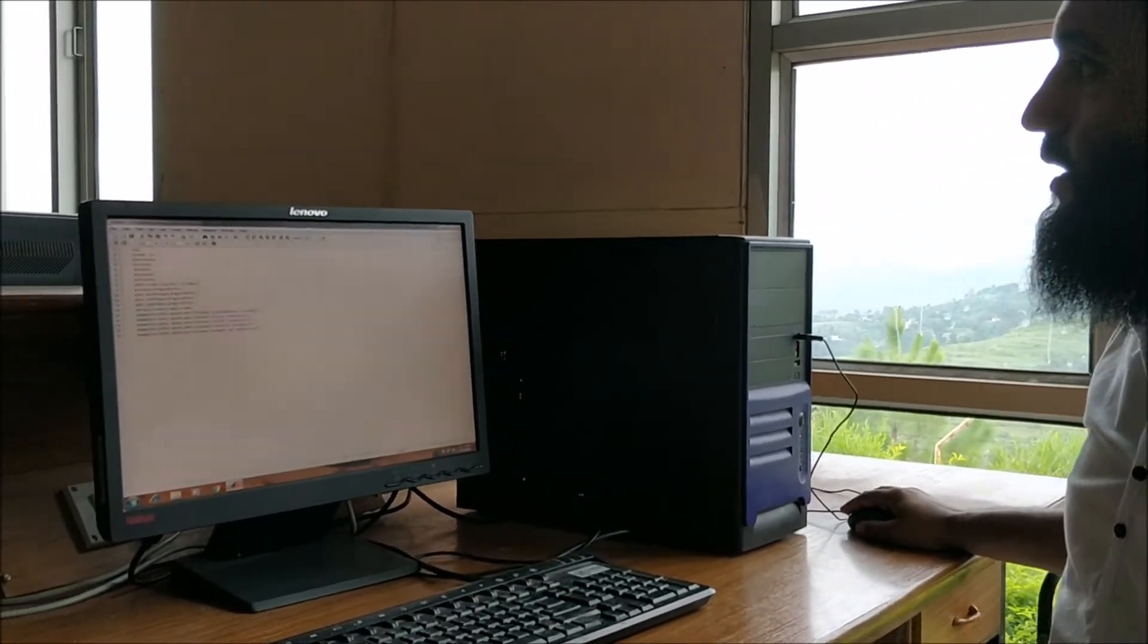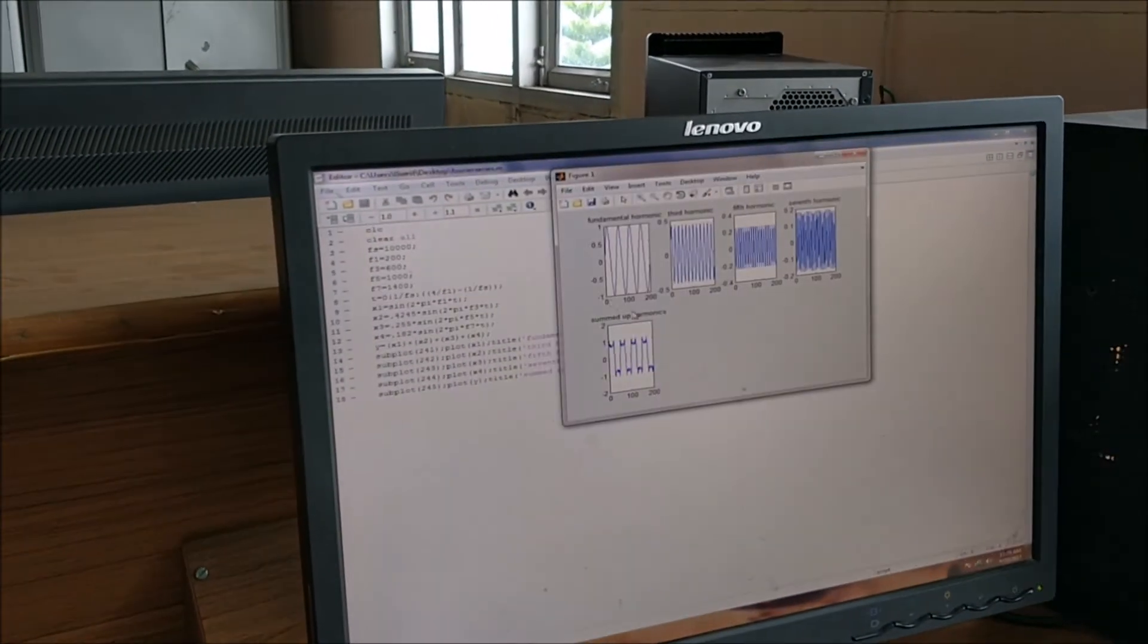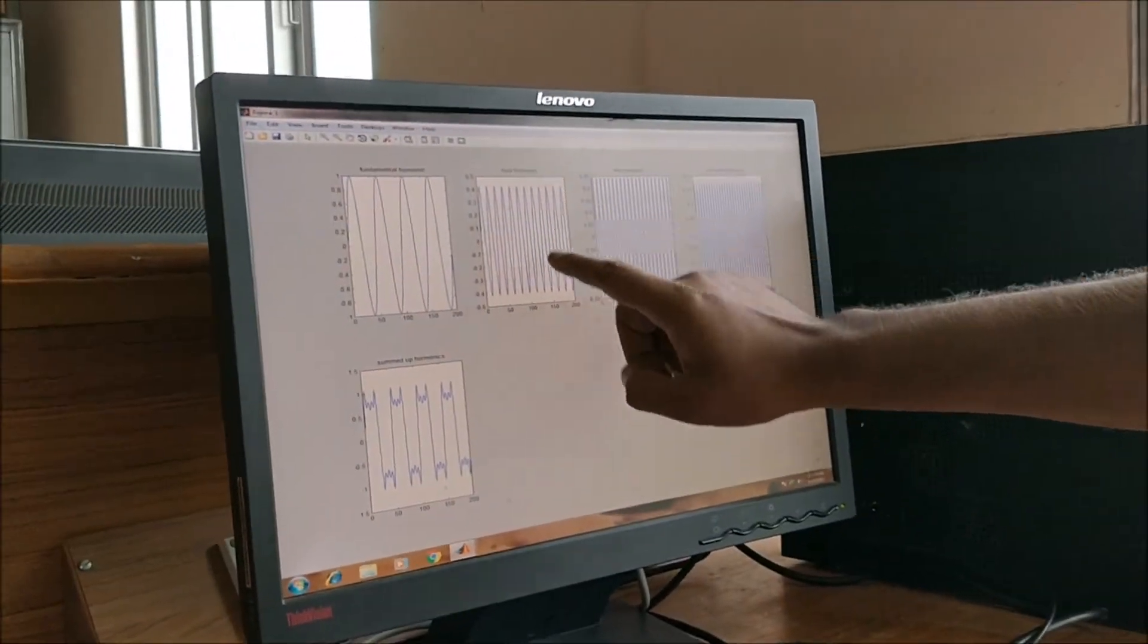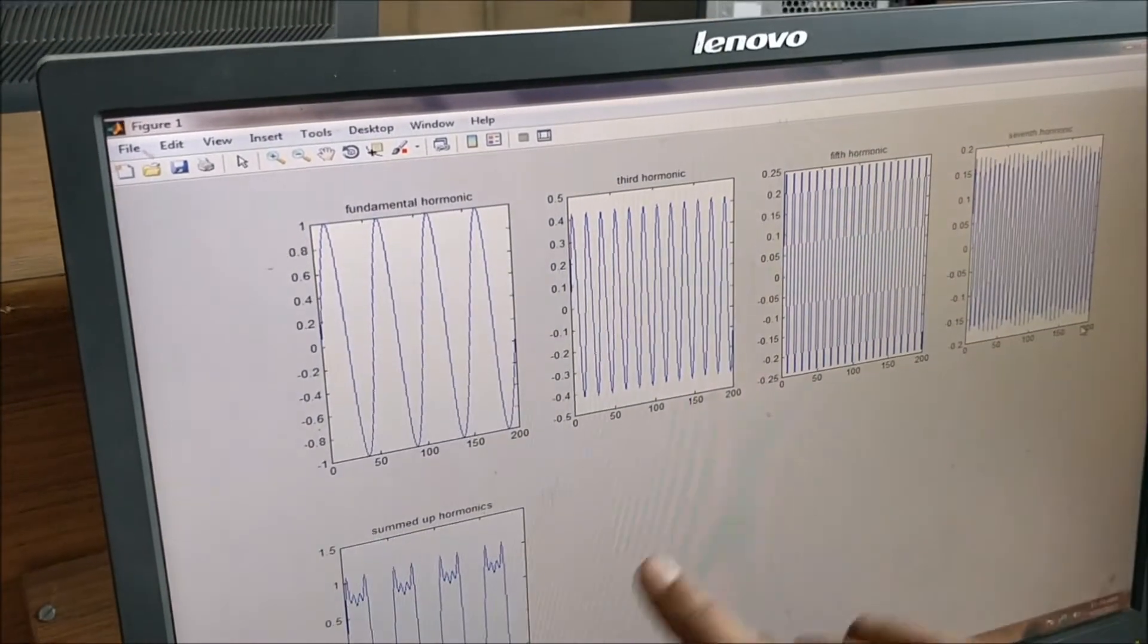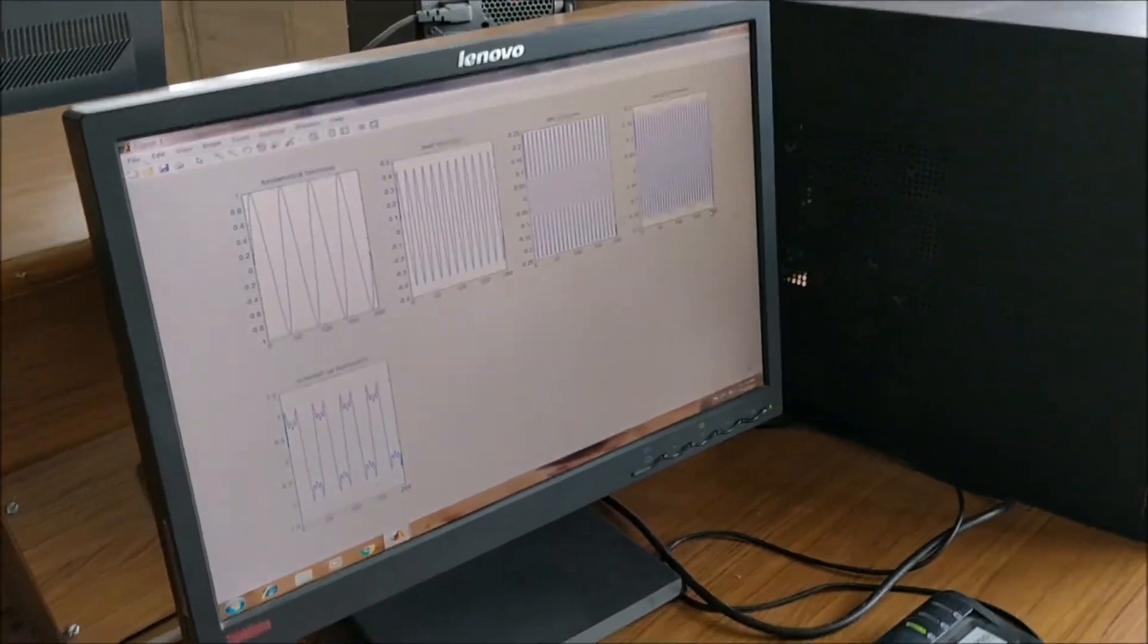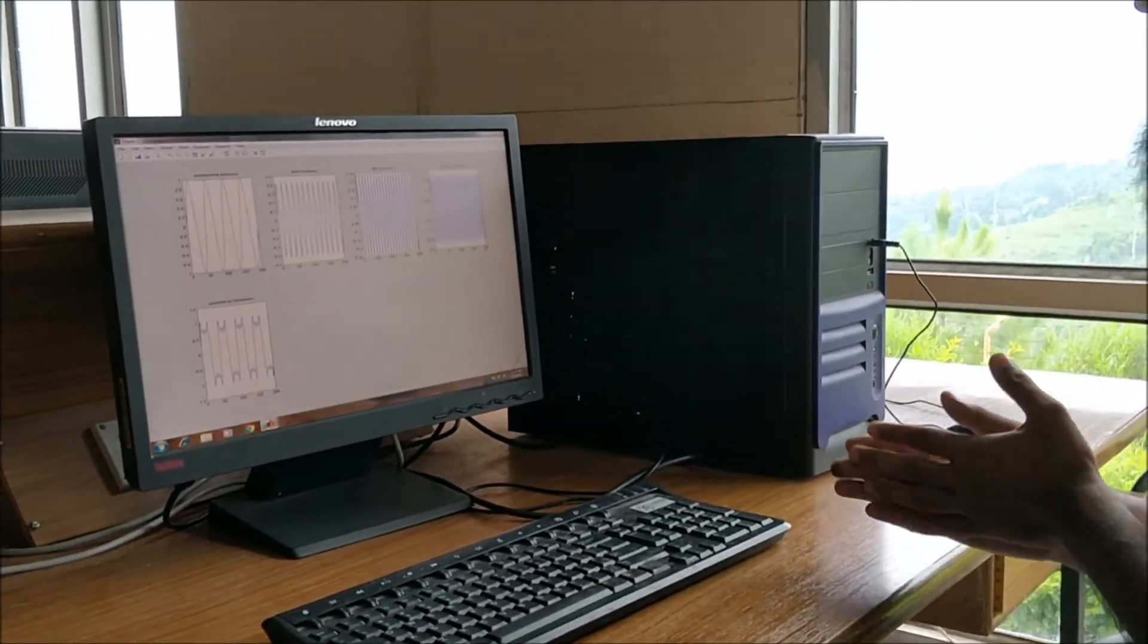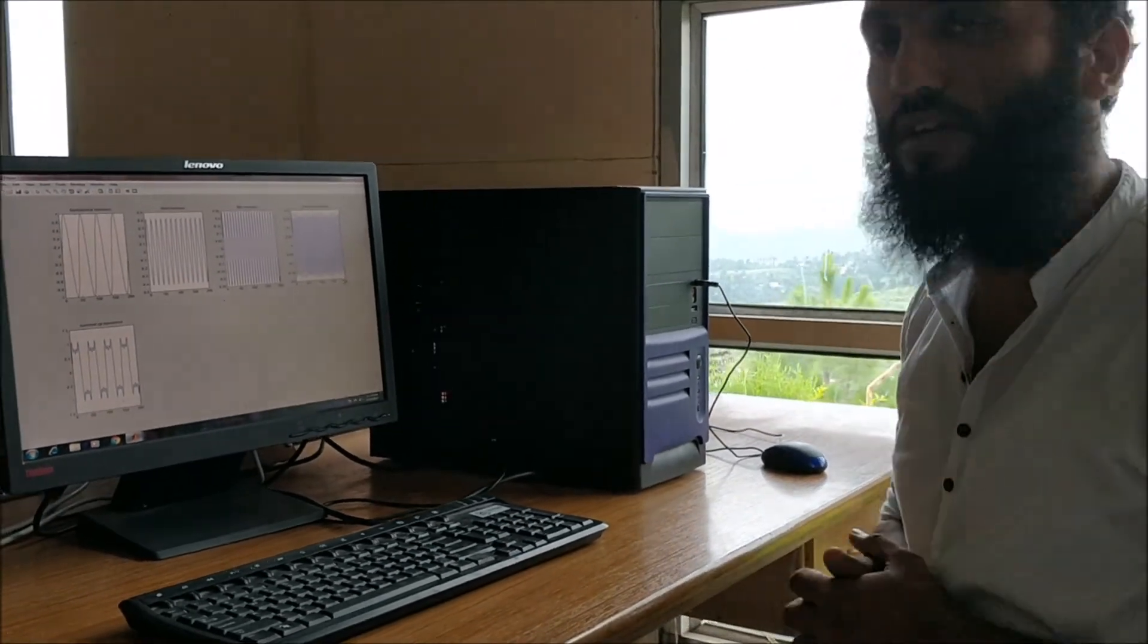If I run this program, I should be getting a signal that I showed on the blackboard. This is the first harmonic, fundamental harmonic. This is the third harmonic as you can see here. This is the fifth harmonic, the seventh harmonic. When I add these harmonics, I get a wave like this that I showed on the board. And if I keep on adding the different odd harmonics up to infinity, I will get a square wave signal that I have taken in the start of this lecture.